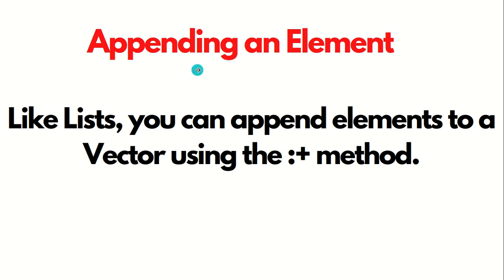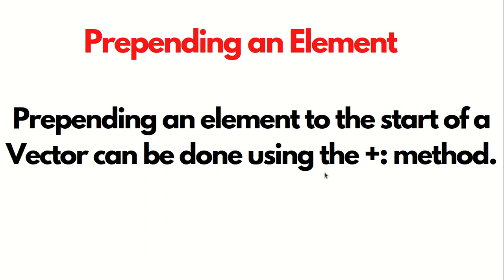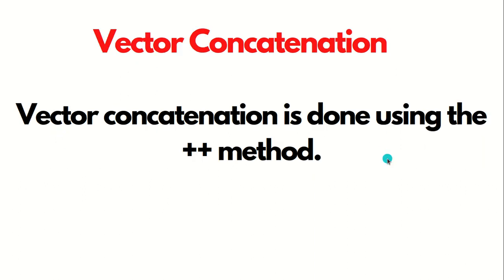To append an element — that is, to add an element to a vector — we use the colon-plus method, the same method we use in a list. To prepend an element, meaning to add an element to the start of the vector, we use the plus-colon method. And lastly, to concatenate — to merge two vectors together — we use the plus-plus method.